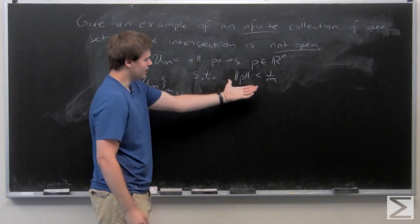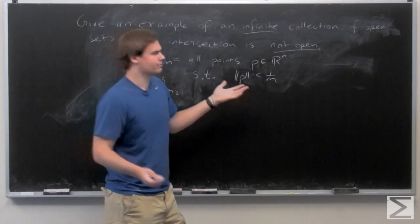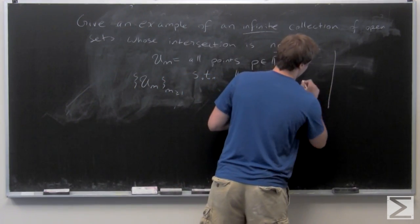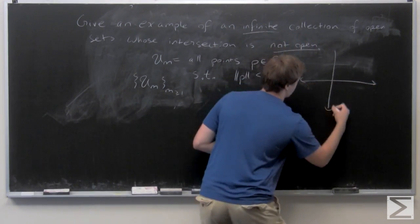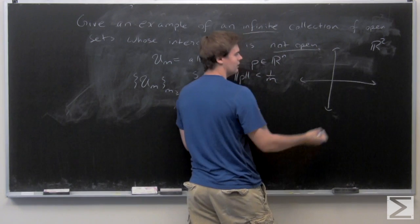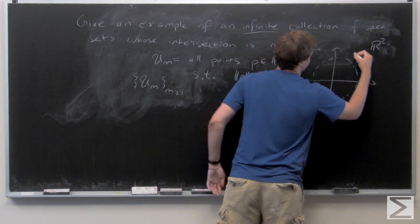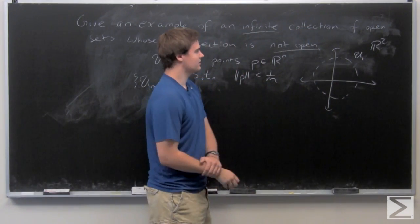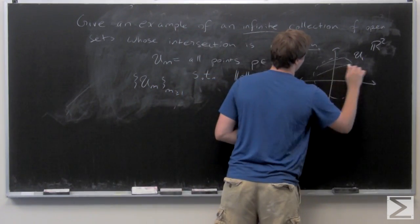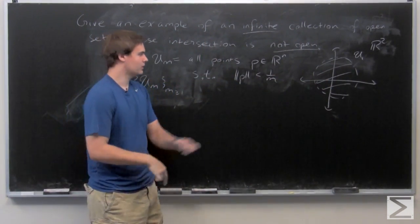You can think of these as kind of like an open ball centered at the origin of radius 1 over m. So for example, in R^2, we can take, say this is U sub 1. Well, it's the open ball of radius 1 that is everything not including its boundary, open set.